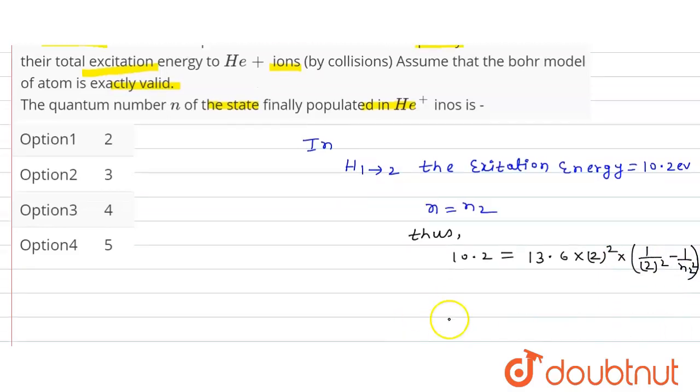So we have to find n2 value from here. So 10.2 is equal to 13.6 into 4 into 1 by 4 minus 1 upon n2 squared.